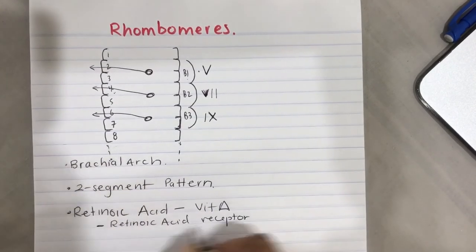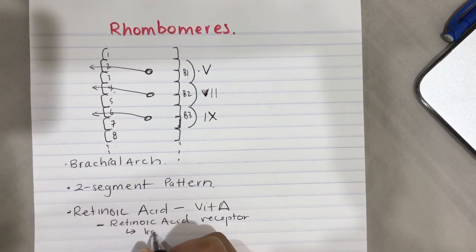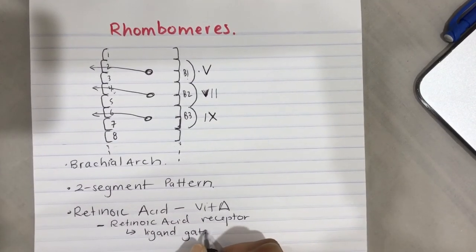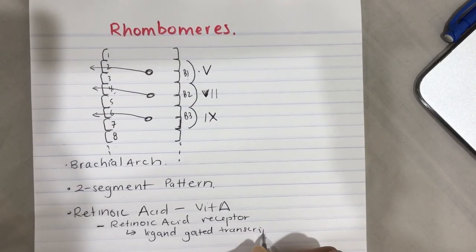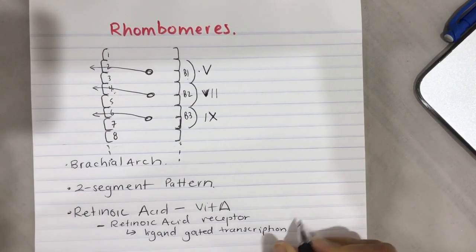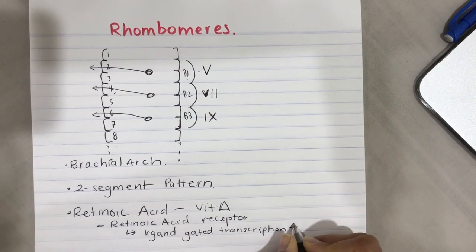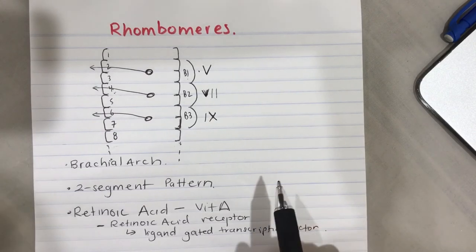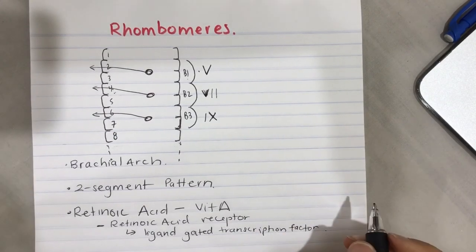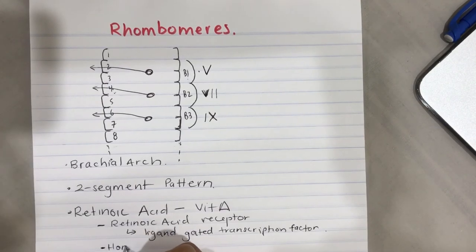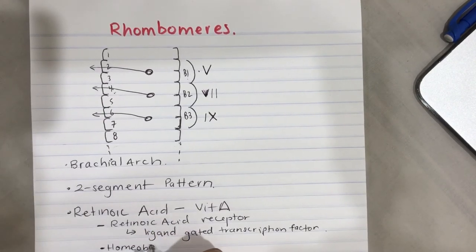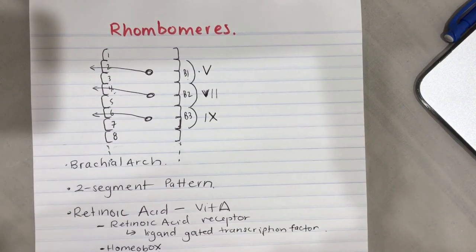The retinoic acid receptor is a ligand-gated transcription factor that acts as a morphogen on Hox gene transcription. Hox is short for homeobox, which is the transcription factor that retinoic acid activates.